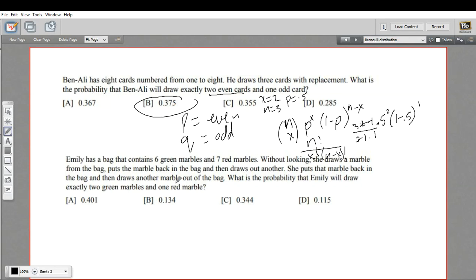Let's try a slightly more complicated one. We've got a bag with 6 green marbles and 7 red marbles, a total of 13. It's the same situation—pulling a marble, putting it back, pulling another, putting it back. What's the probability that you have 2 green marbles and 1 red marble? Let's call green our success. The probability of pulling a green marble is 6 out of 13. So q is red, with probability 7 out of 13.